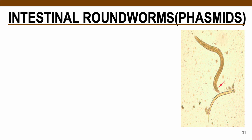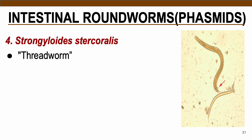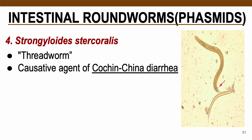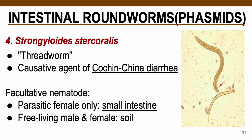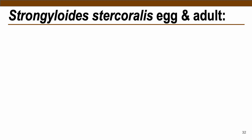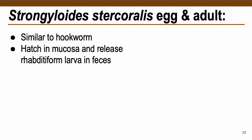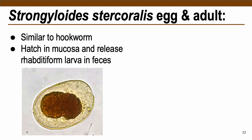The next intestinal phasmid roundworm is Strongyloides stercoralis, also known as threadworm — causative agent of Cochin-China diarrhea, considered a facultative nematode (may or may not be parasitic in nature). Only the female is considered parasitic inside the host, residing in the small intestine. Other forms, including free-living adult males and females, are found in the soil.